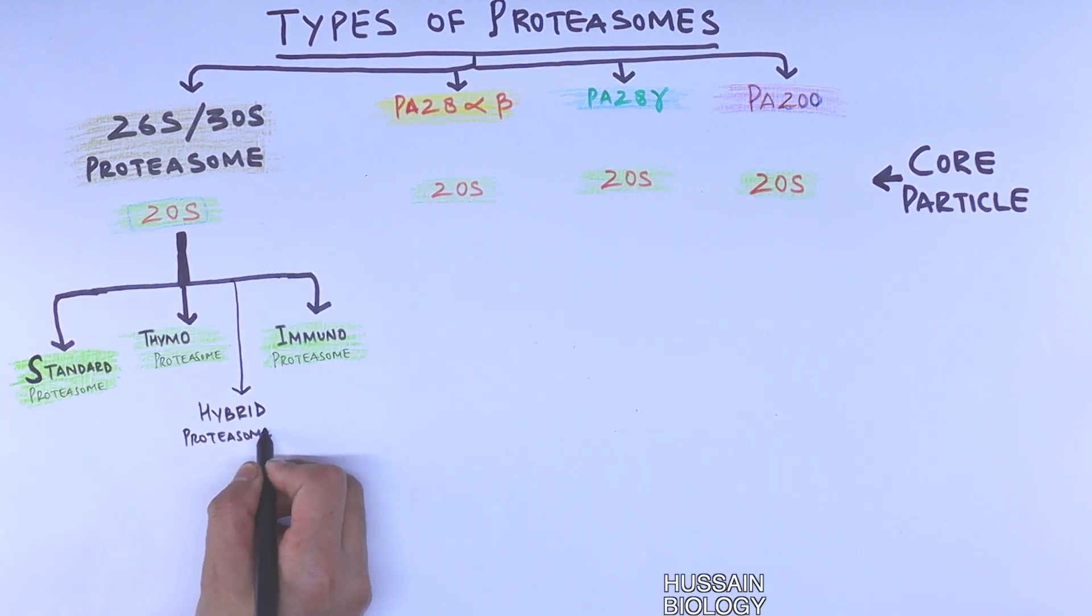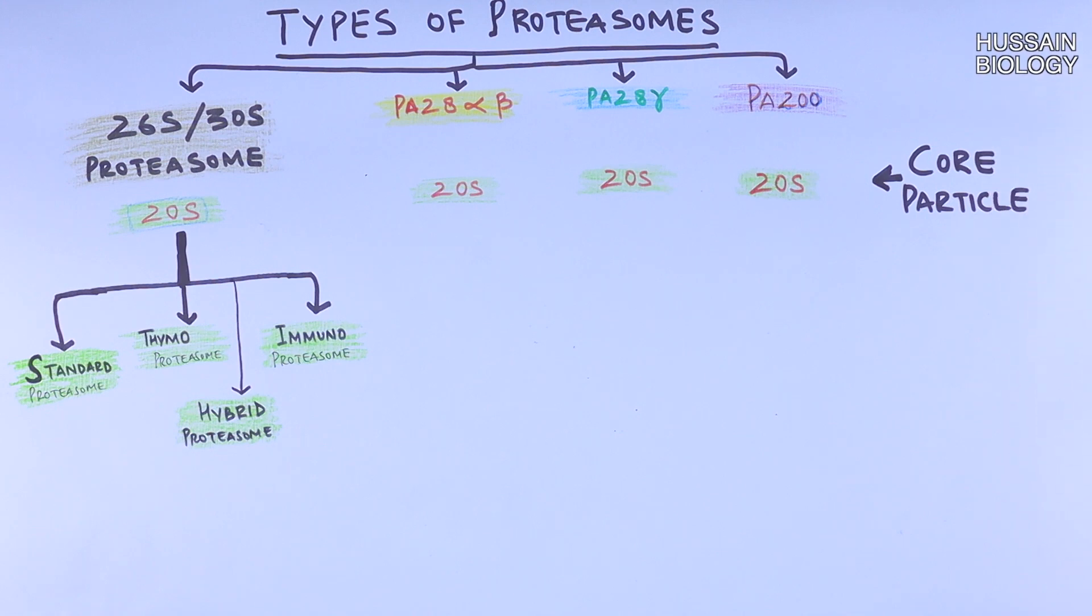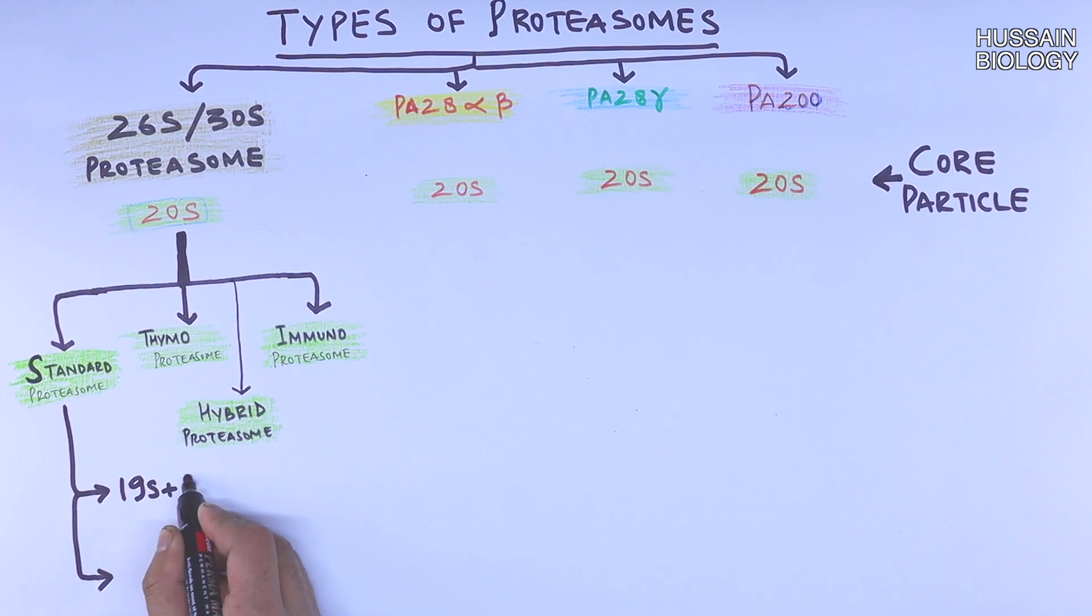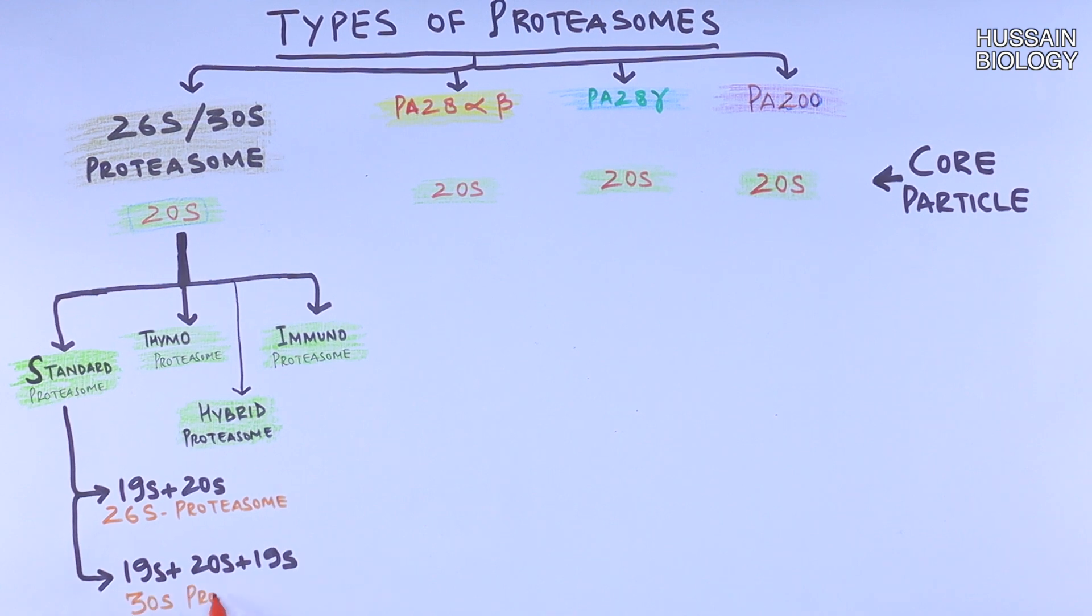Now getting into the details, the standard proteasome is made up of 19S plus 20S units, or it's made up of 19S plus 20S plus 19S units. The 19S is the regulatory unit and 20S is the core unit. So the first one, 19S plus 20S, is actually the 26S proteasome, whereas the second one, 19S plus 20S plus 19S, is the 30S proteasome.